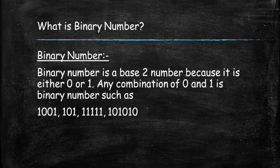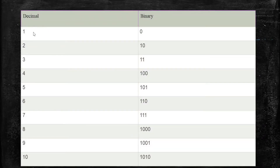Basically, decimal numbers are the normal numbers starting from 0 to 9, and binary numbers are what a computer can understand. For example, if we enter 1, the computer will translate it as 0 in binary. If we type 2, it will translate it as 1 0. If we type 3, it will translate it as 1 1.